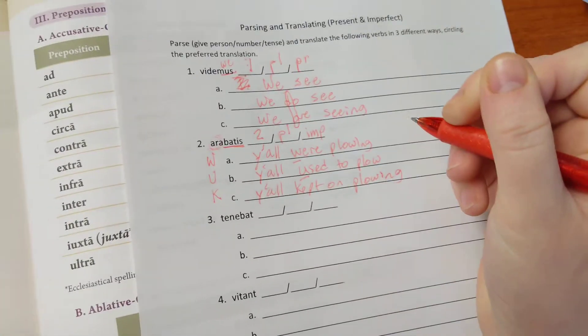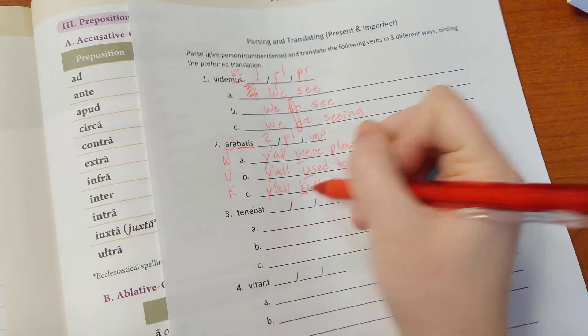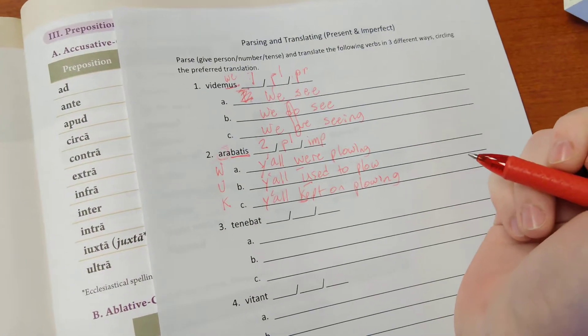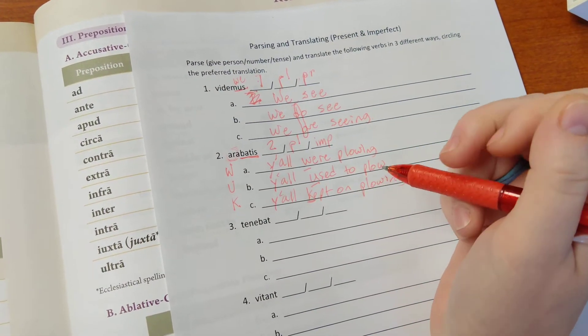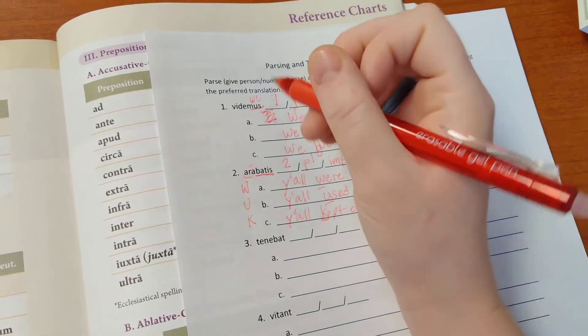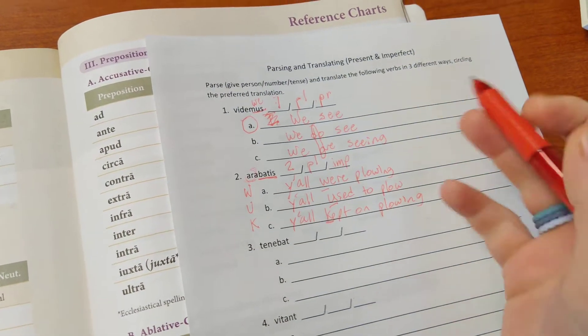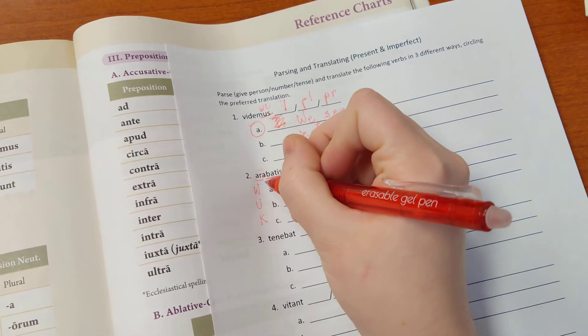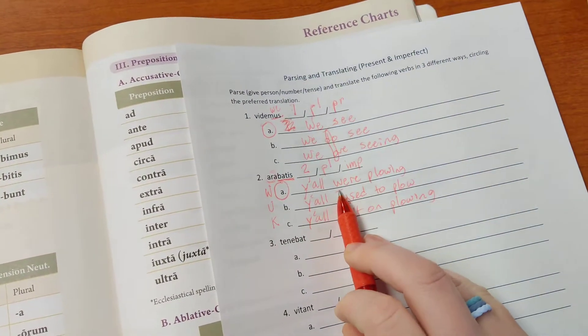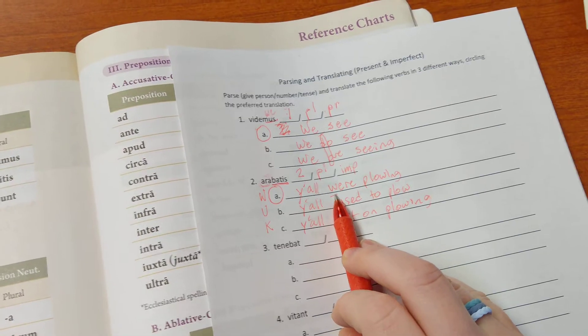Sorry for the framing there. I got distracted. So were, used to, kept on are our three ways for imperfect. Now we're supposed to circle our preferred translation. For present tense, that's the first one. We'll always default to the first one unless it sounds weird. And for imperfect, we will always default to the were or was version, unless it sounds weird.